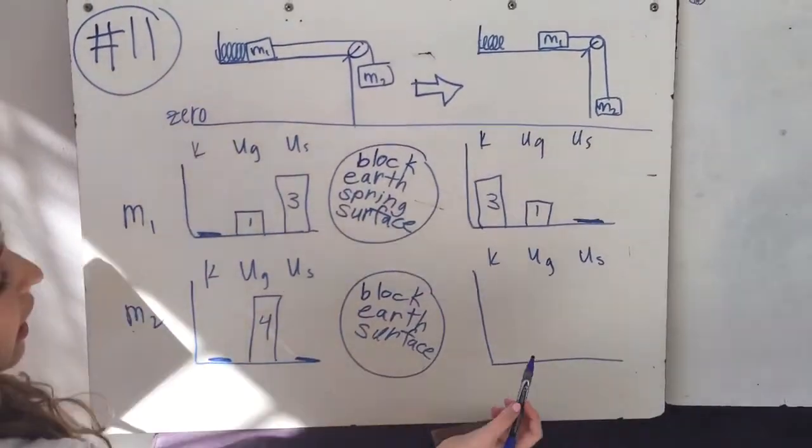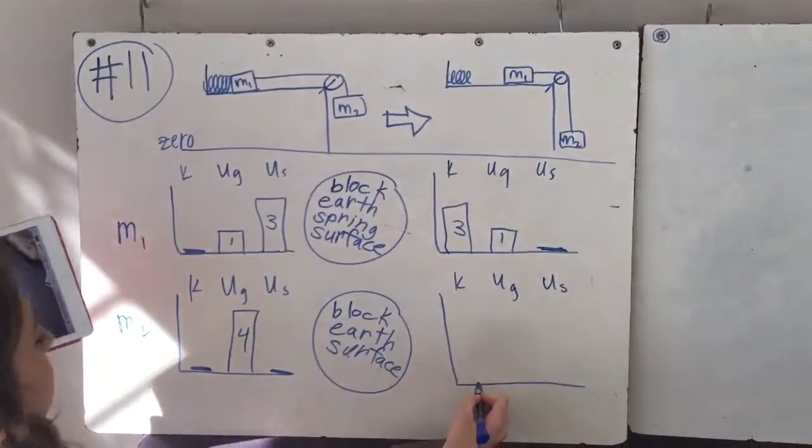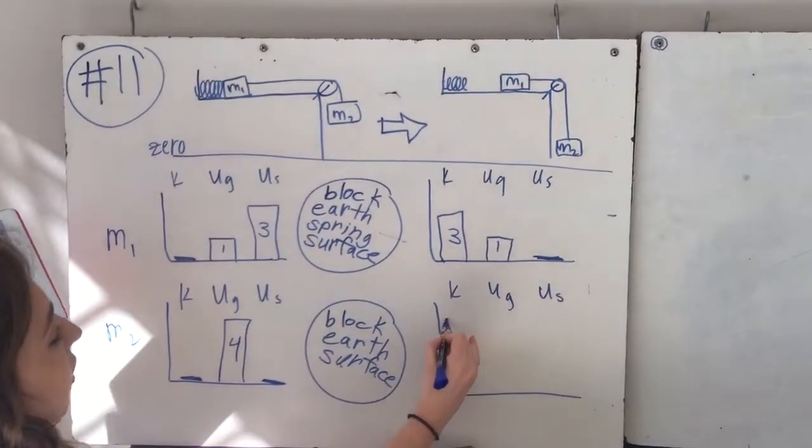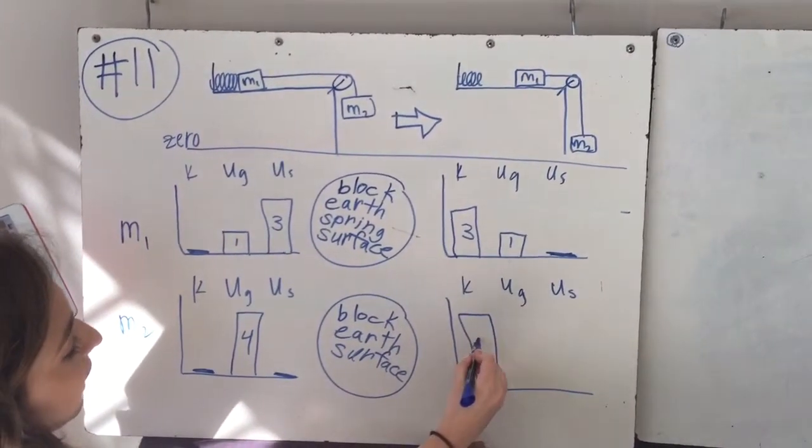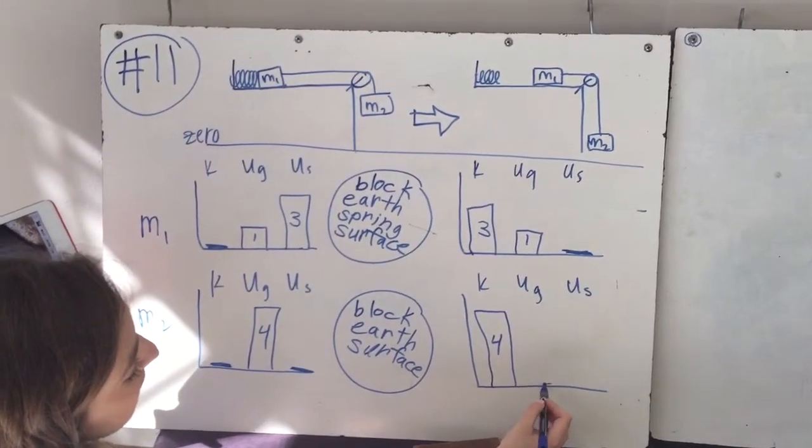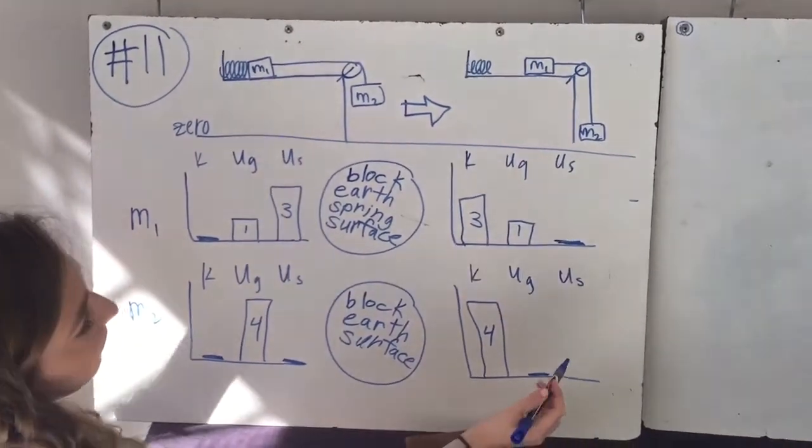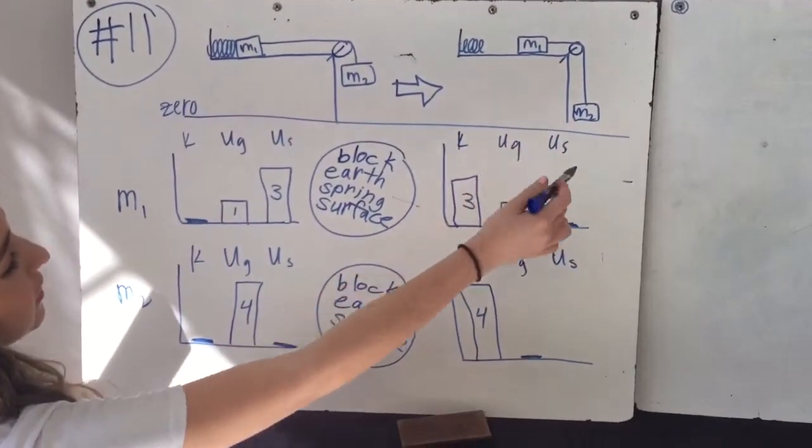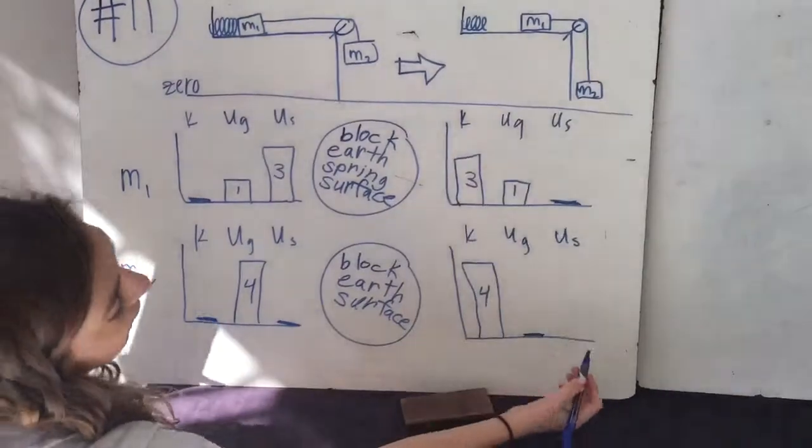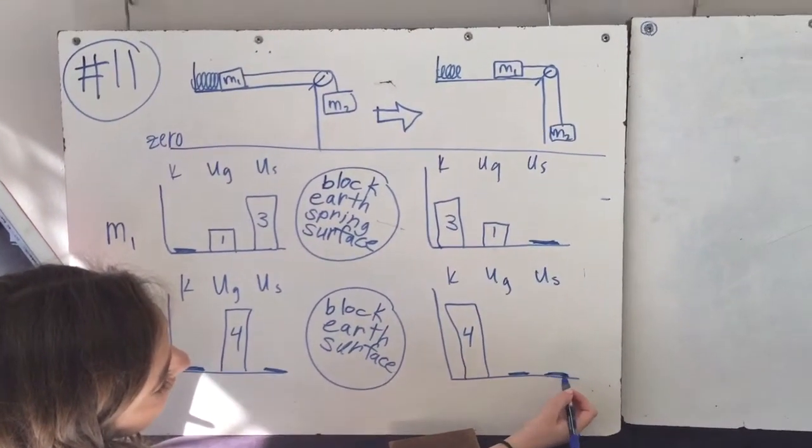And then once it moves, it's going to have all kinetic energy because it's in motion and it's not touching anything. And there's no potential energy because it has no height anymore, because it's all the way down. And then there's no potential energy for the spring because it's not attached to the spring either.